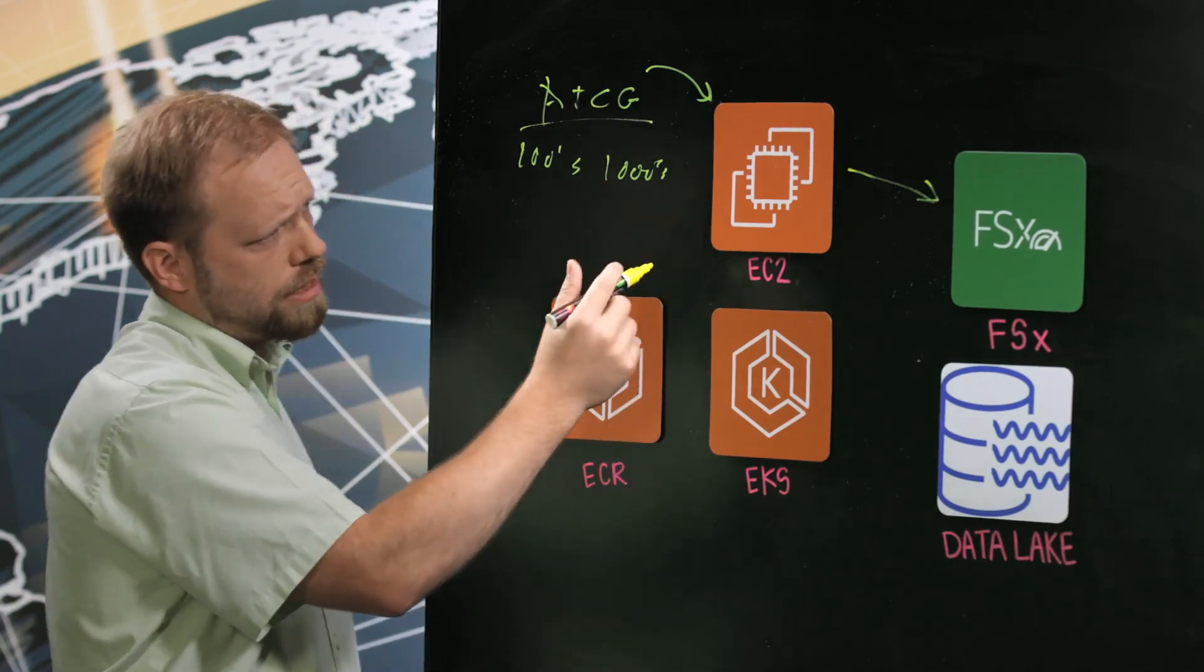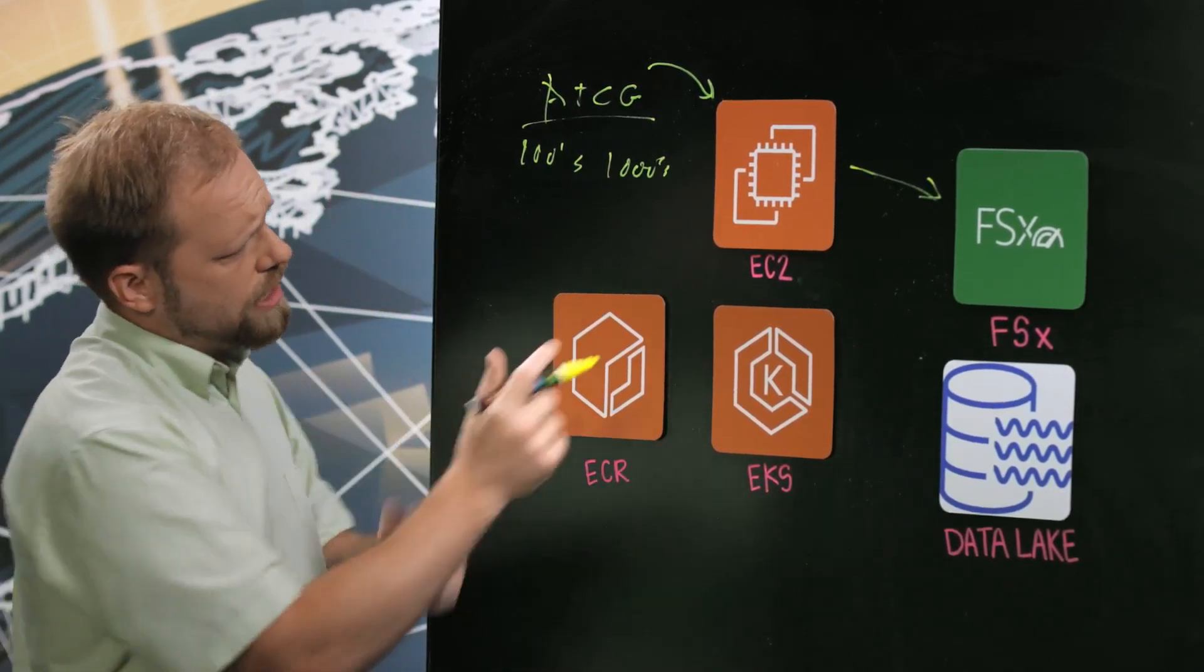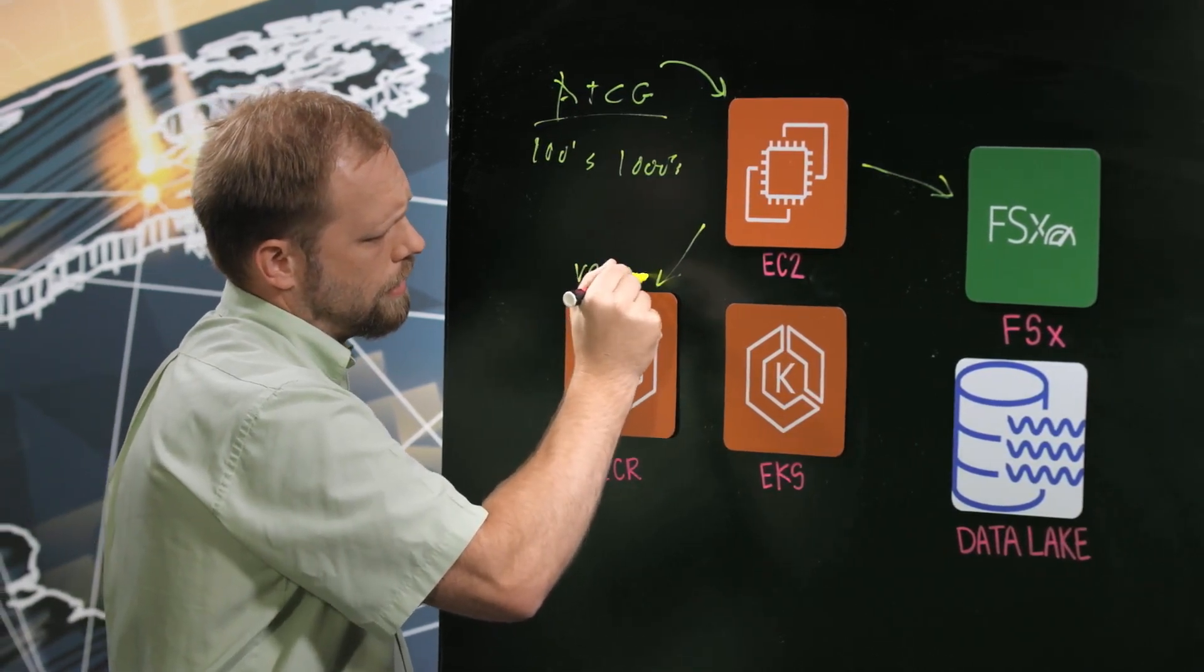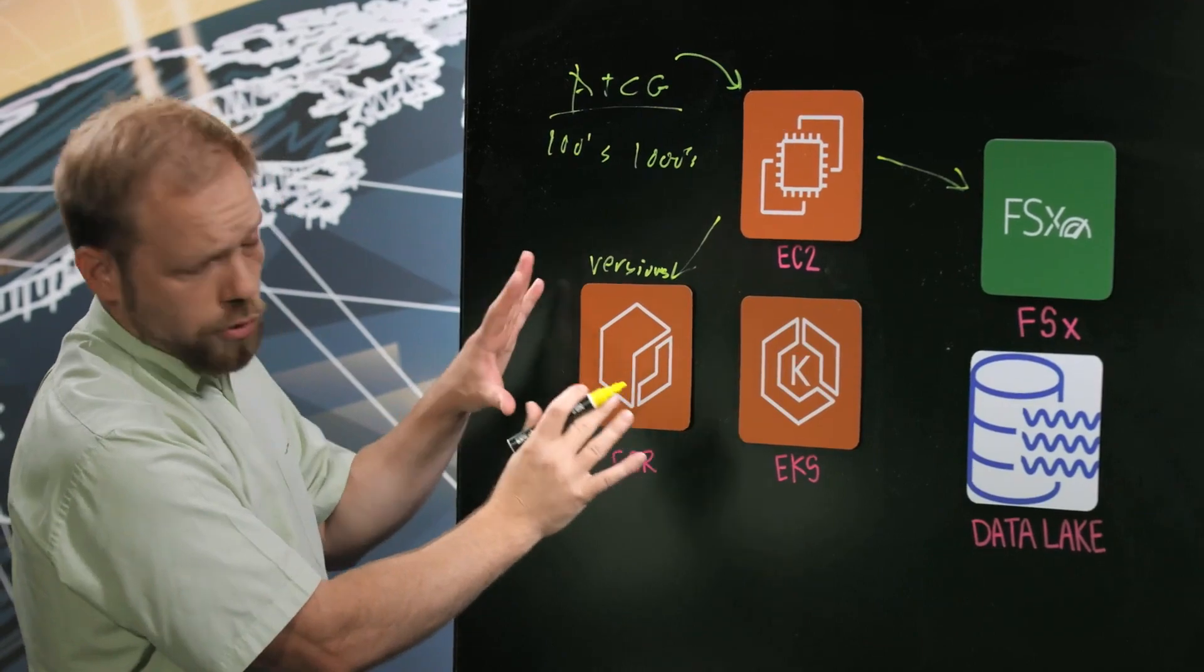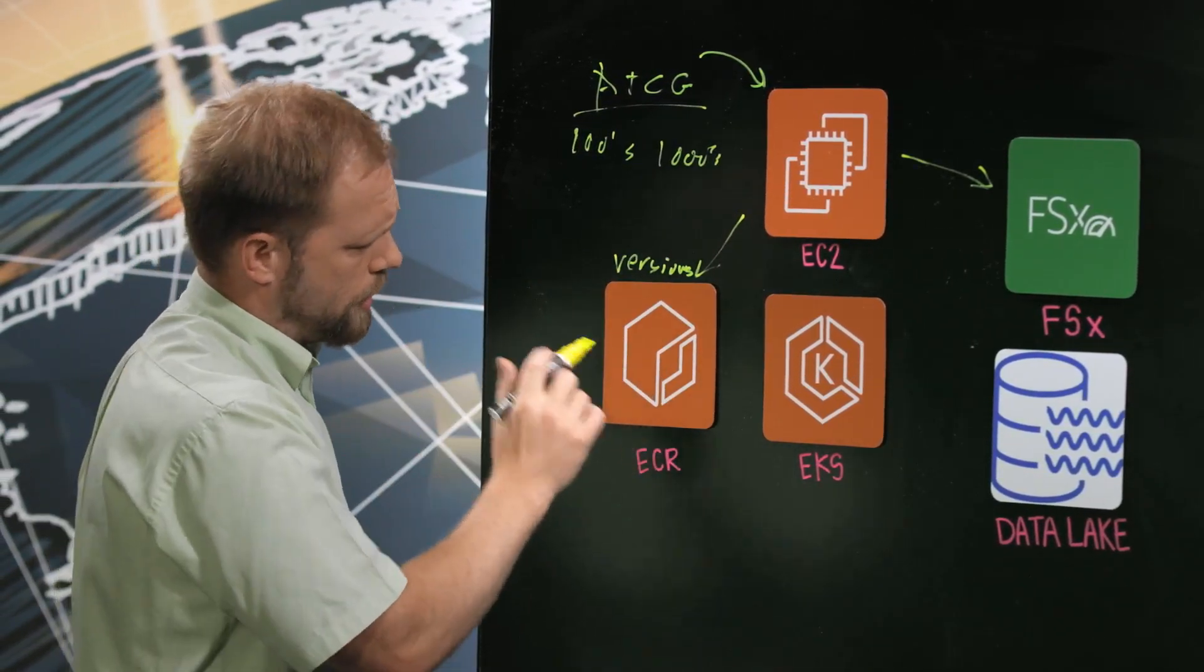And so what happens is that we take the set of software that we're using and we freeze it into version containers. And that's stored in ECR. We have both versions for a particular pipeline and multiple pipelines stored here.